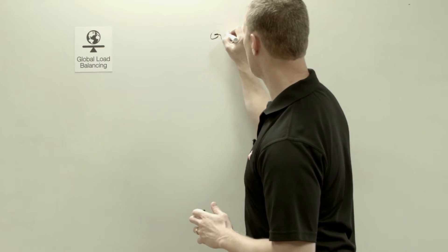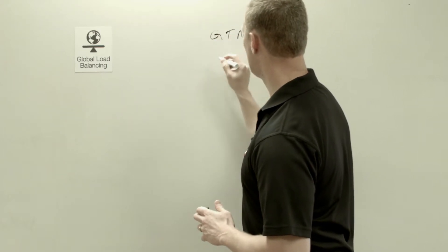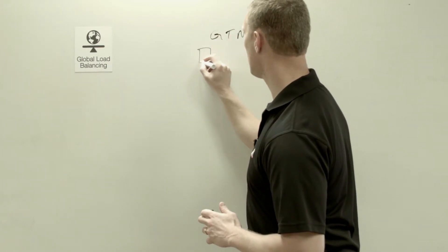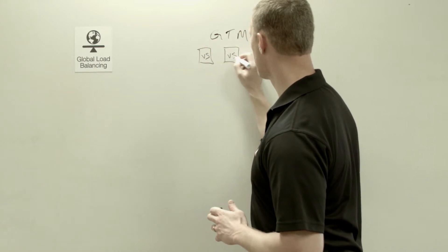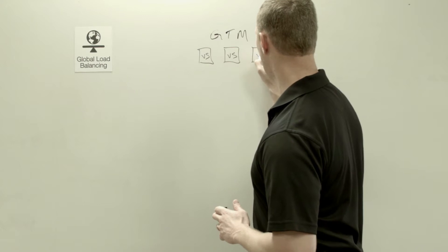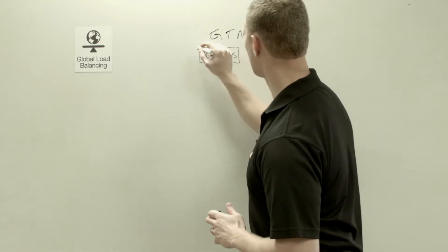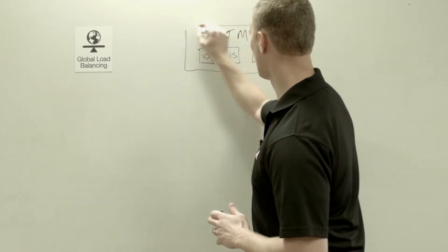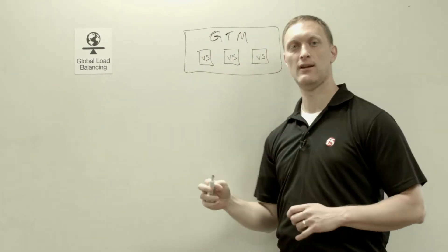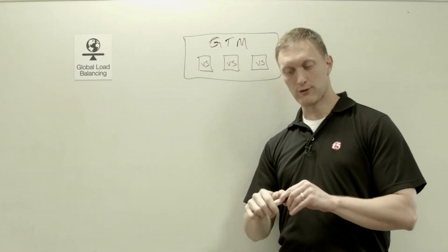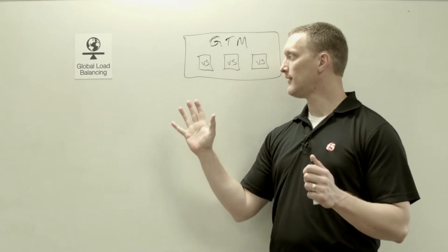So let's say you have a GTM, and this GTM has, I'm going to give it three virtual servers. So I'll just draw these quickly, and we are going to decide today, I'll just put a big box around all this, we're going to decide which of these virtual servers gets selected for use.